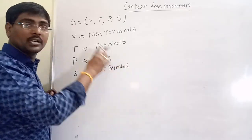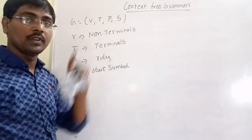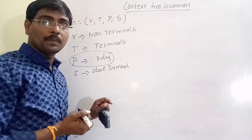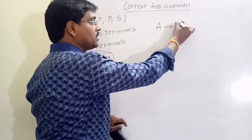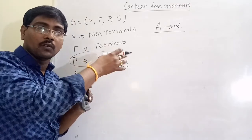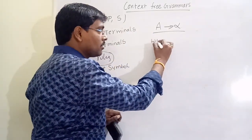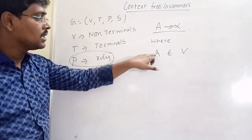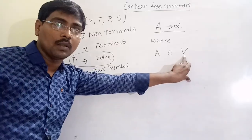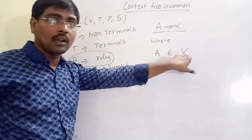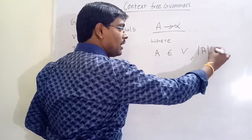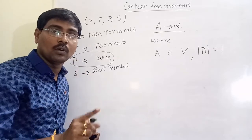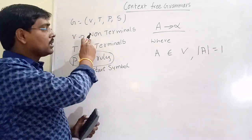These are the four-tuple representations for any grammar. Now, to satisfy context-free grammar, we have to define the production rule. A production rule appears in the form A tends to alpha, where A belongs to V. That means the left-hand side is compulsory a non-terminal, and the length of the left-hand side is always 1 — that is, one non-terminal, also called a variable.